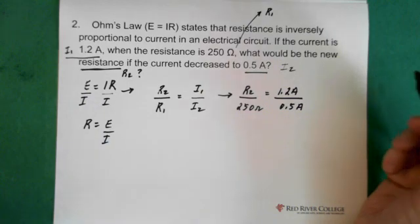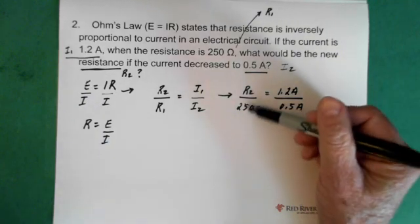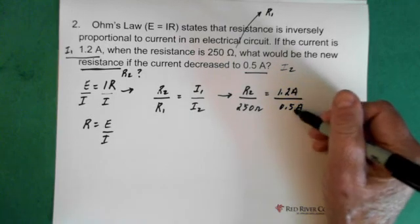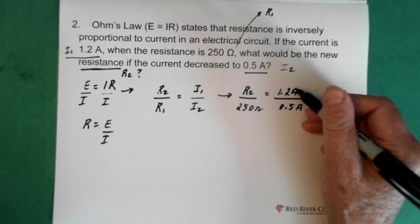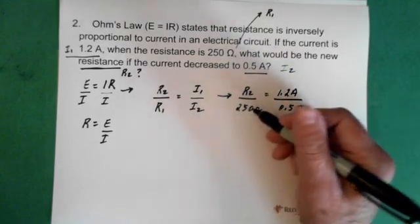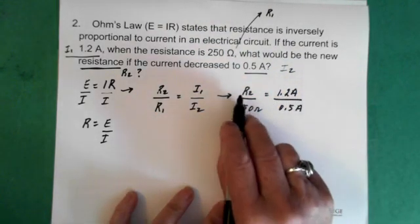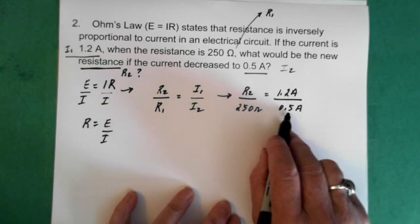And again, remembering the units on this side are the same. It's ohms over ohms. The units on this ratio are the same, amps over amps. And there's this inverse relationship. This is connected to this. R2 is connected to the 0.5 amps.